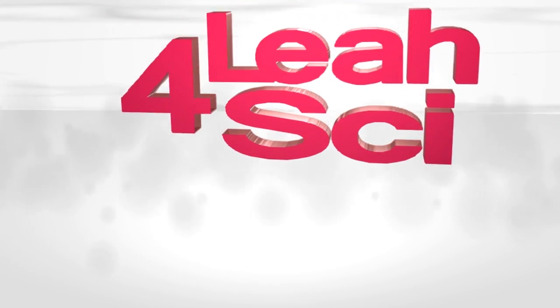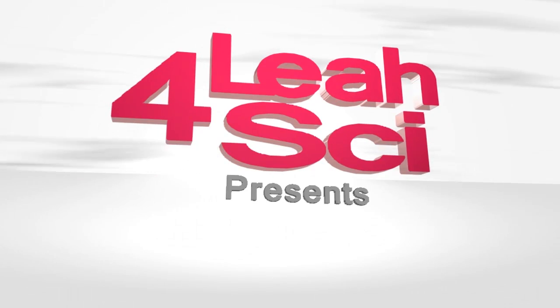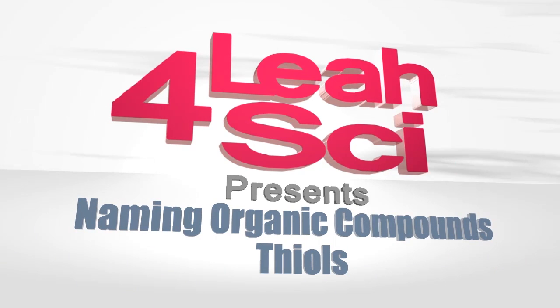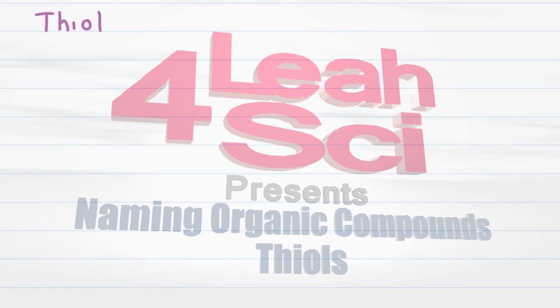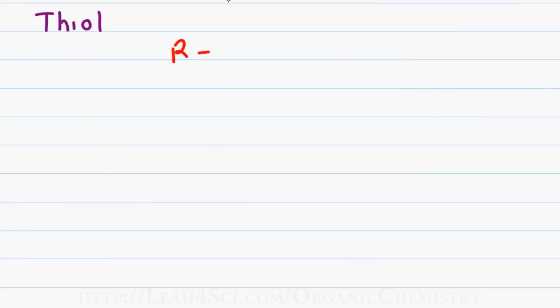Leah here from leah4sci.com and in this video I will show you how to name thiols. A thiol is a molecule that has R bound to SH where R represents the rest of the molecule and SH is your functional group.